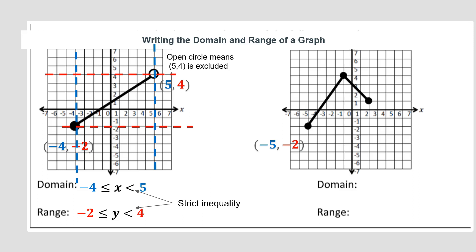Here we have points at (negative 5, negative 2), (negative 1, 4), and (2, 1). For the domain, looking all the way to the left, it starts at negative 5 and stops at the x value of 2. So the domain is: x is greater than or equal to negative 5 and less than or equal to 2.